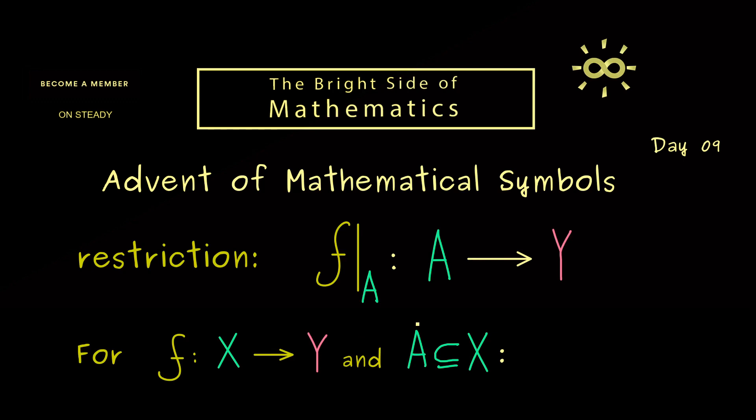And now the only question we have is how can we define this new map, the restriction of f to A. Indeed, the definition is very simple because it should do the same as f itself. This means if we put in an x, we get the same result no matter which function we use.